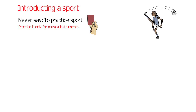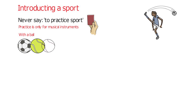Here are the rules. First of all, if the sport uses a ball — such as football, tennis, or baseball — use the verb 'to play'. For example: 'He plays football' or 'We play rugby'.